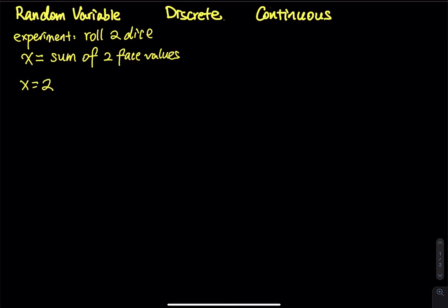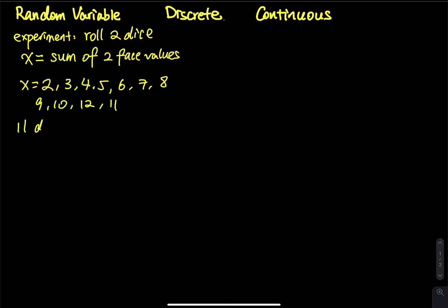What about the maximum? The maximum is six plus six equals twelve. So the sum can be two, three, four, five, six, seven, eight, nine, ten, eleven, twelve. I totally missed eleven earlier. From two to twelve, there are eleven distinct outcomes — eleven distinct sums — and these eleven distinct sums are countable.